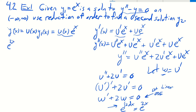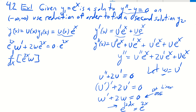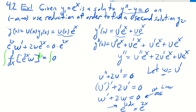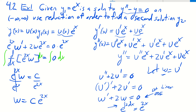Multiplying through by e^(2x), the left-hand side becomes a total derivative: d/dx[e^(2x)·w] = 0. Taking the antiderivative of both sides with respect to x gives e^(2x)·w = C. Dividing both sides by e^(2x), we get w = C·e^(−2x).